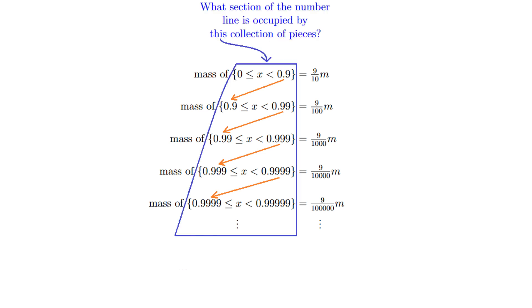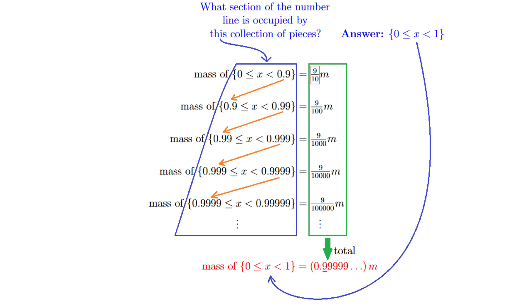And now I want to ask, what section of the number line is occupied by this infinite collection of pieces of the number line? Well the answer is it's the section of the number line going from 0 inclusive up to 1 exclusive. And therefore the mass of this section is equal to the total of all of the masses of the constituent pieces here. And we can refer to this total value as 0.9 recurring times m, because there's a nine in the tenths place, and a nine in the hundredths place, and a nine in the thousandths place, and so on. But of course, by definition, the mass of this stretch going from 0 inclusive up to 1 exclusive was precisely our original m. So we have that m equals 0.9 recurring times m, and so 1 equals 0.9 recurring.